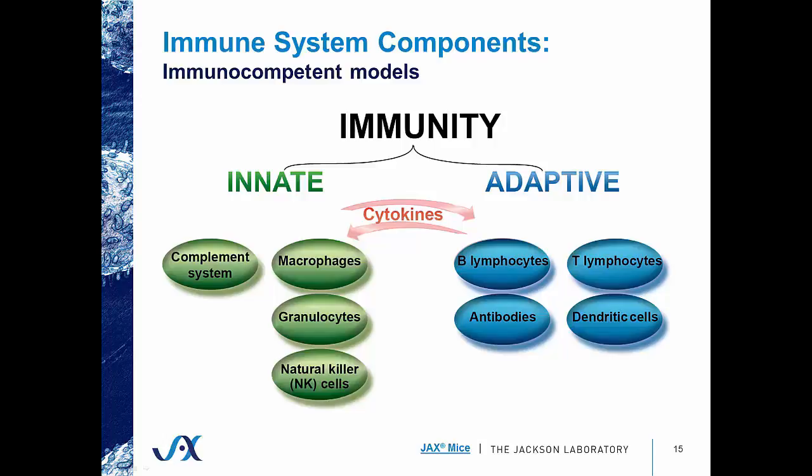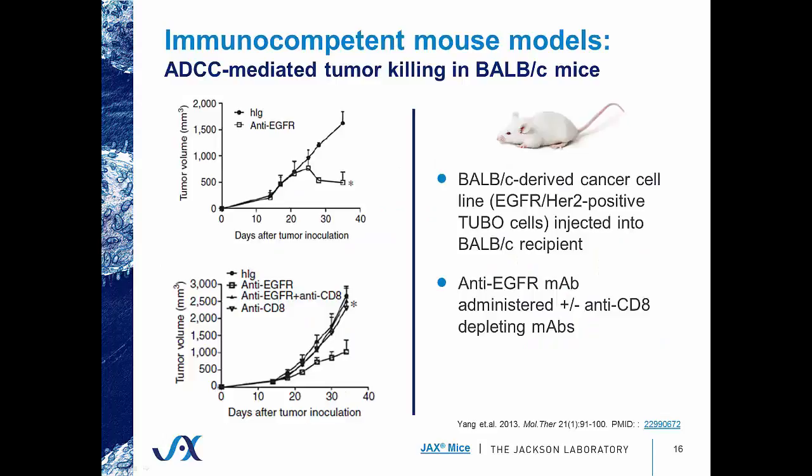For our first example, we're looking at a BALB/c mouse, which is a very popular inbred strain. BALB/c-derived cancer cell lines that are EGFR and HER2 positive were injected into a BALB/c recipient mouse — one example of syngeneic tumor modeling. EGFR, or Epidermal Growth Factor Receptor, is commonly upregulated in a number of cancers and is correlated with poor patient prognosis. Investigators tested the efficacy of their therapeutic monoclonal antibody against EGFR and measured tumor volume over the course of almost 40 days. Their therapeutic antibody inhibited tumor growth as compared to their human IgG control.